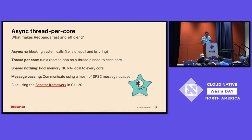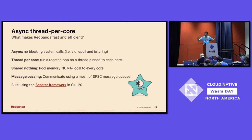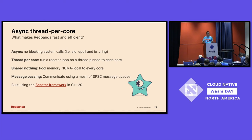We use all asynchronous system calls — whether talking to network or disk, nothing ever blocks. We run a reactor loop, similar to an event loop in Node.js, to process tasks as they happen. We share nothing in terms of memory between cores — think of each core as its own logical little computer. We allocate all system memory up front and divide it across cores in a NUMA-friendly distribution pattern. Cores communicate using single-producer, single-consumer message queues that form a mesh between them. We use a framework called Seastar for this, written in C++20 modern C++, which is what empowers us as the framework upon which we've built this high-performance message broker.